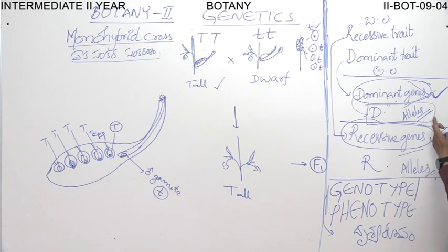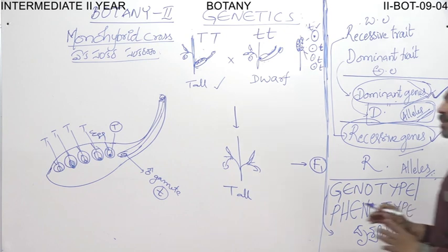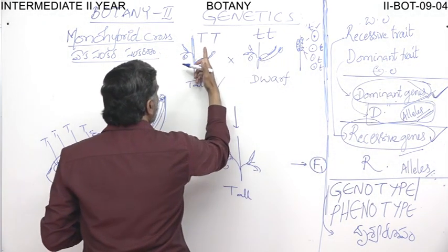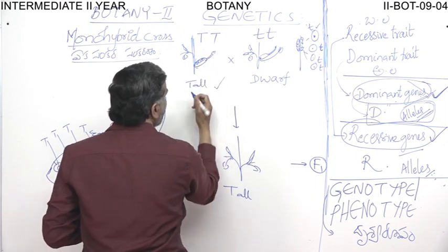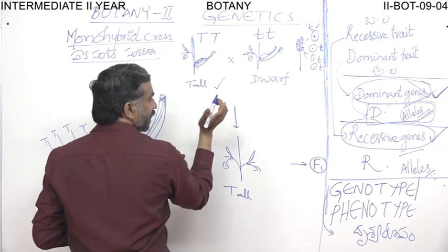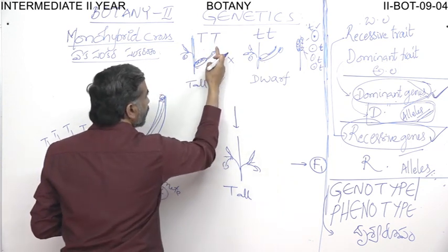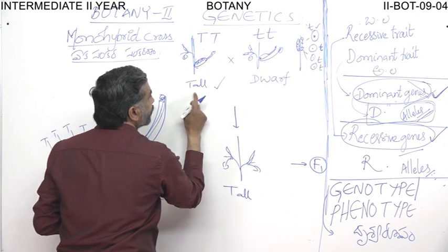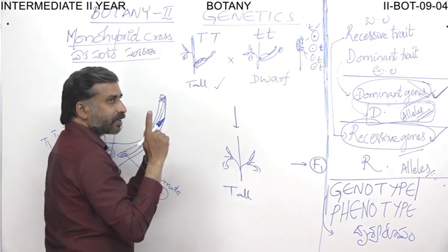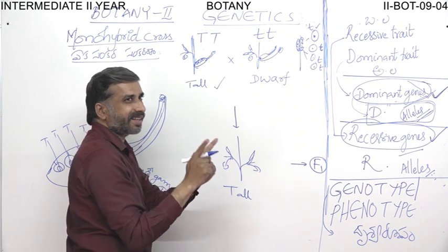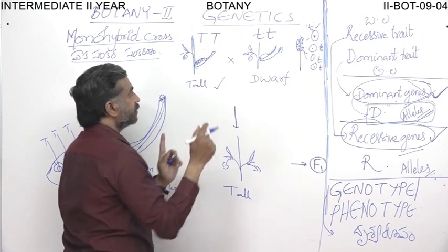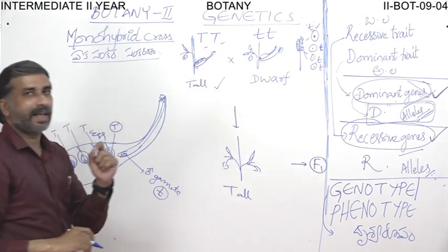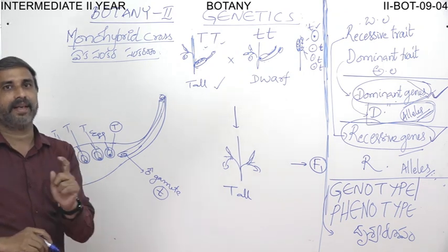Why use dominant alleles instead of dominant genes? The two genes coding for a single character — both genes responsible for the expression of tallness in the plant — whenever two genes code for a single character and are located on the homologous chromosomes, those two genes are known as alleles.